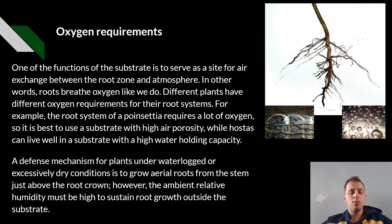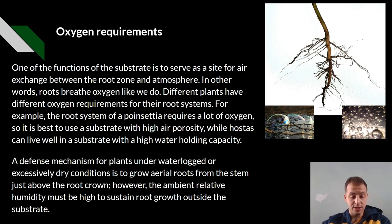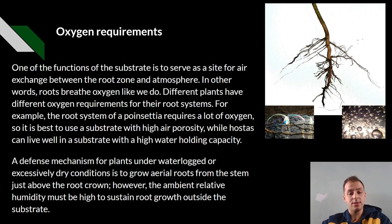Oxygen requirements. One of the functions of the substrate is to serve as a site for air exchange between roots and the atmosphere. In other words, roots breathe oxygen like we do. Different plants have different oxygen requirements for their root systems. For example, the root system of a poinsettia requires a lot of oxygen, so it's best to use a substrate with high air porosity, while hostas can live in a substrate with high water holding capacity. A defense mechanism for plants under waterlogged or excessively dry conditions is to grow aerial roots from the stem just above the root crown. However, the ambient relative humidity must be high enough to sustain root growth outside the substrate, or else this will not occur.